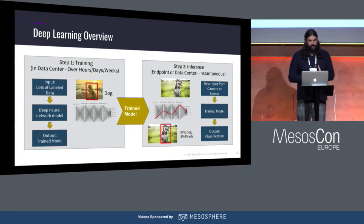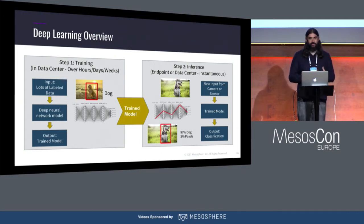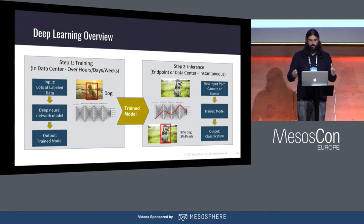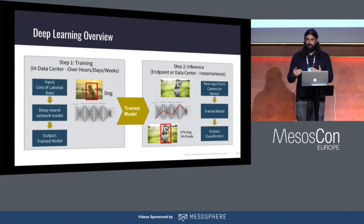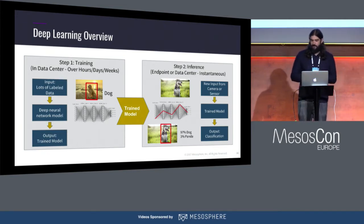Thinking about deep learning, there's always a training phase and an inference phase. The training phase is the one that takes hours, days, or weeks — you feed the model lots of labeled pictures of dogs, and the neural network trains itself to figure out what a dog looks like. Out pops a trained model, and from there you can use it to infer whether a picture is a dog, and that process becomes essentially instantaneous — hitting some endpoint that walks through the network and tells you with some certainty, say, 97% a dog.